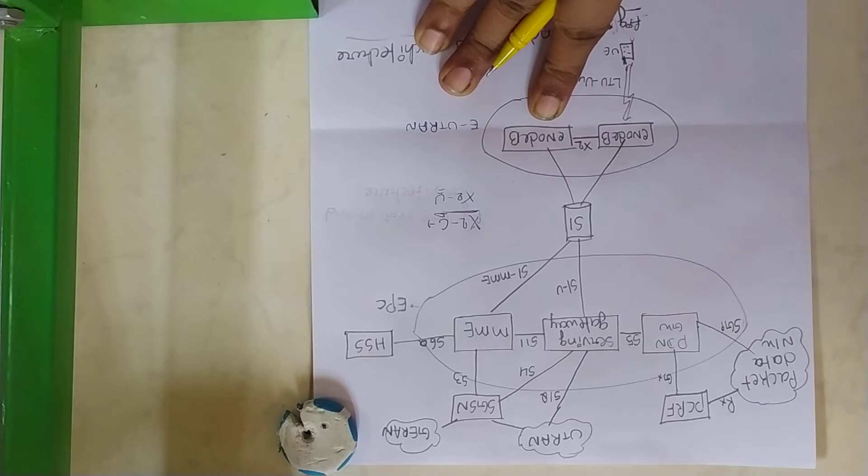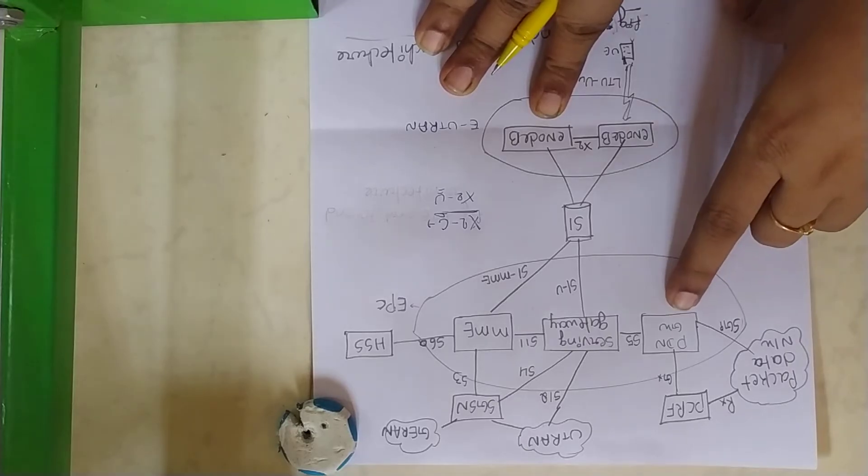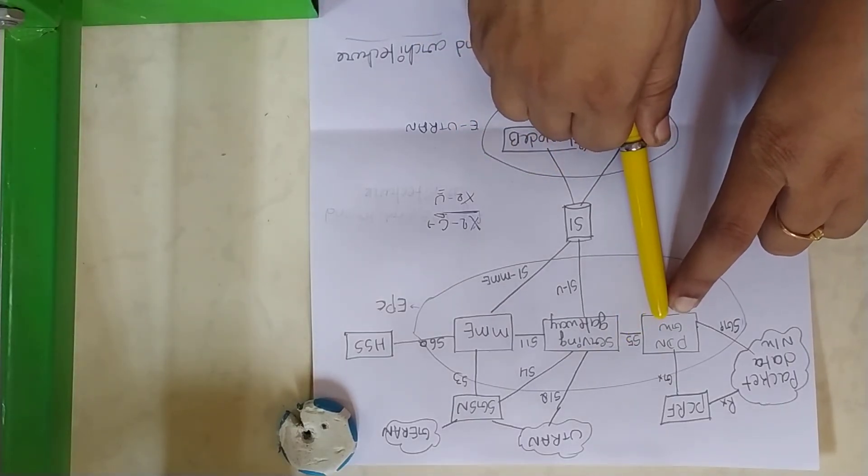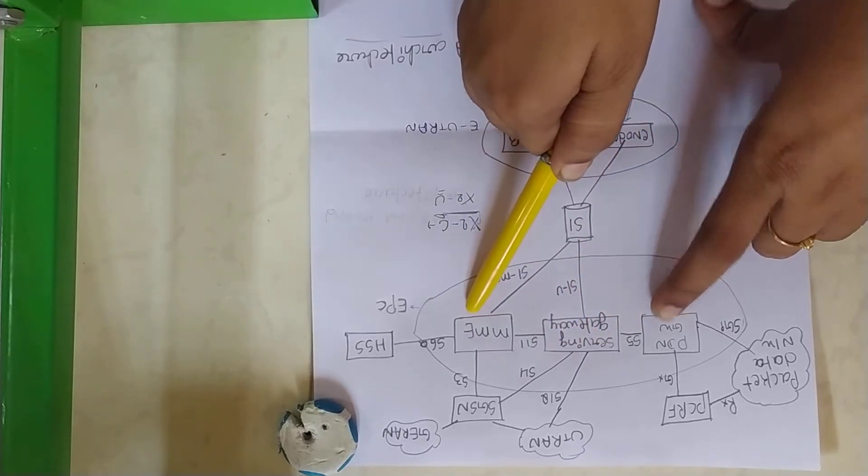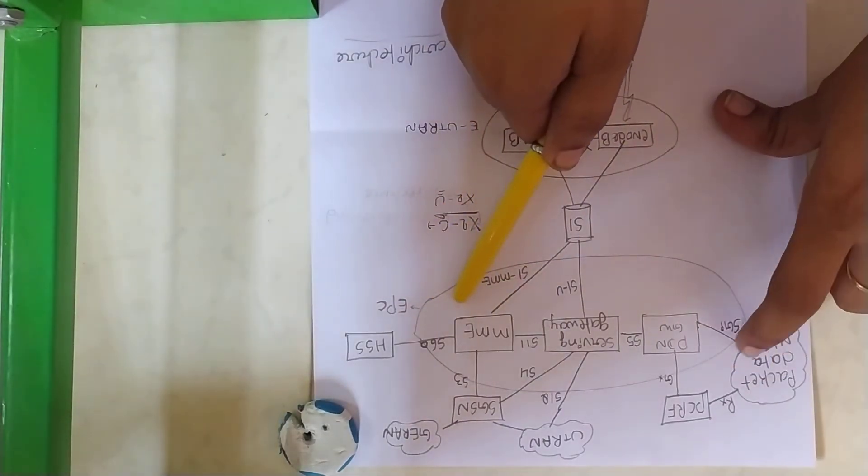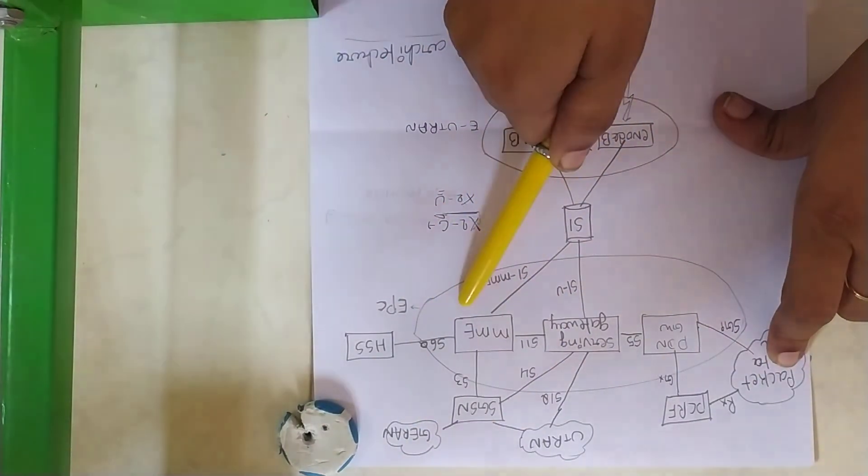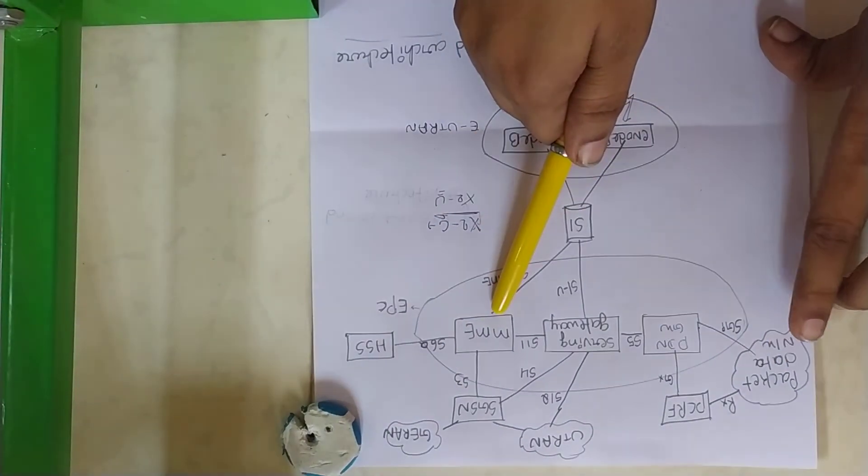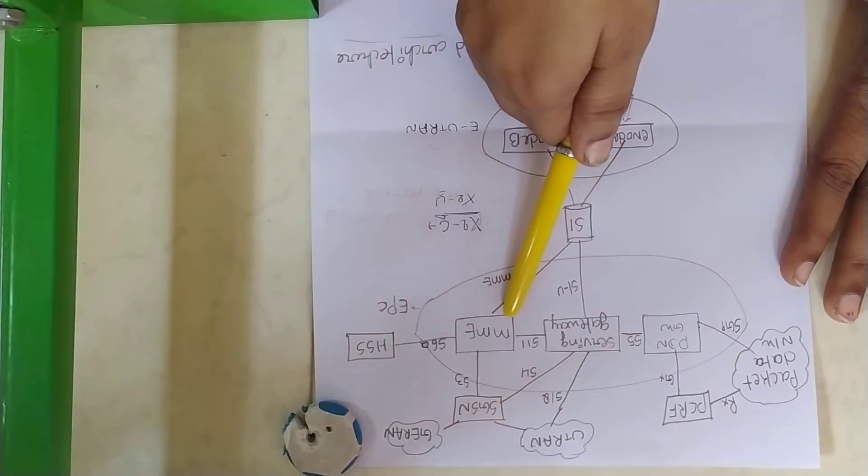PDN gateway, that is Packet Data Network gateway, acts as a router. It routes the data packets between EPC and the external data network. It is the key node for policy enforcement and charging data collection.